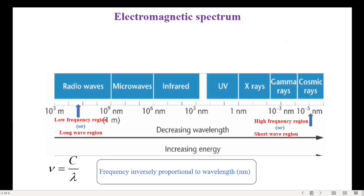Before getting to the topic, we must familiarize ourselves with the electromagnetic spectrum. You all know different colors — different colors represent different wavelengths. This is an electromagnetic spectrum. It consists of all wavelengths from longer to shorter wavelength, that is from radio waves to cosmic rays.